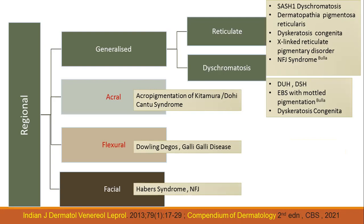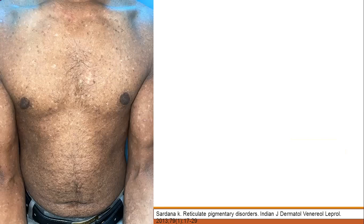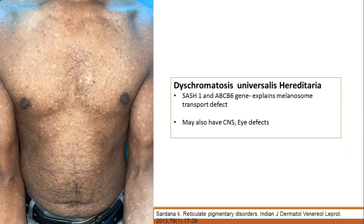Now I'm going to run you through some photographs and give you a glimpse of what you may see in your practice. Classic case of dyschromatosis universalis, described by Michael Lee — see this pigmentation. There's freckle-like pigmentation all over the body, hyper and hypo. This is a condition which has got two gene defects: SASH1 and ABCD6 gene, which explains the melanosome transfer defect, which also explains why they have hyper and hypo. Usually they're benign with no grave consequence, but some of them actually have involvement with the CNS and eye. Visibly common, described in Japanese, but we see it even in our country.